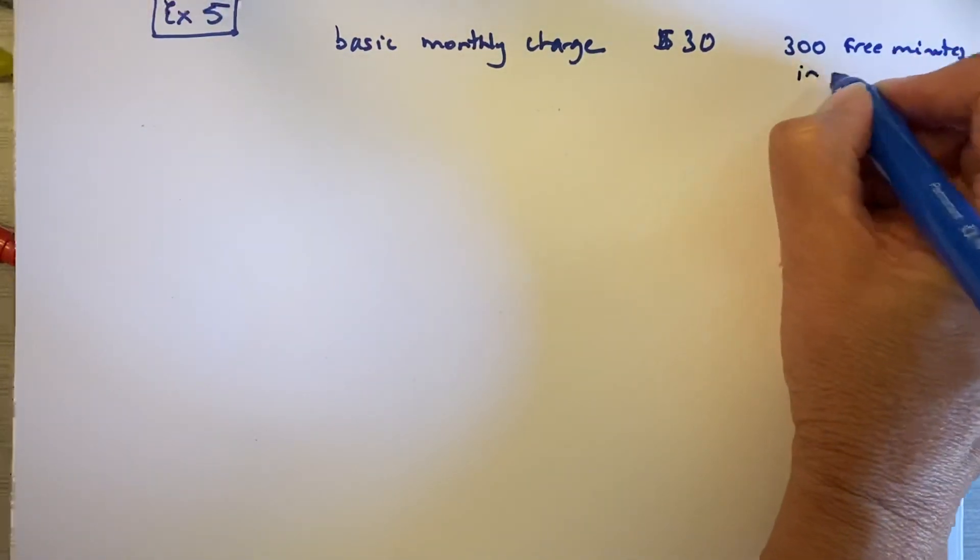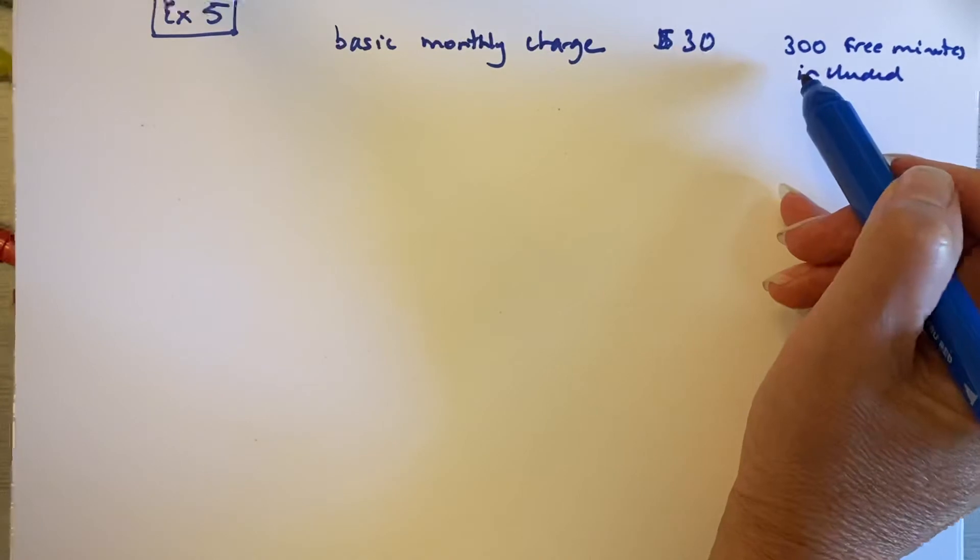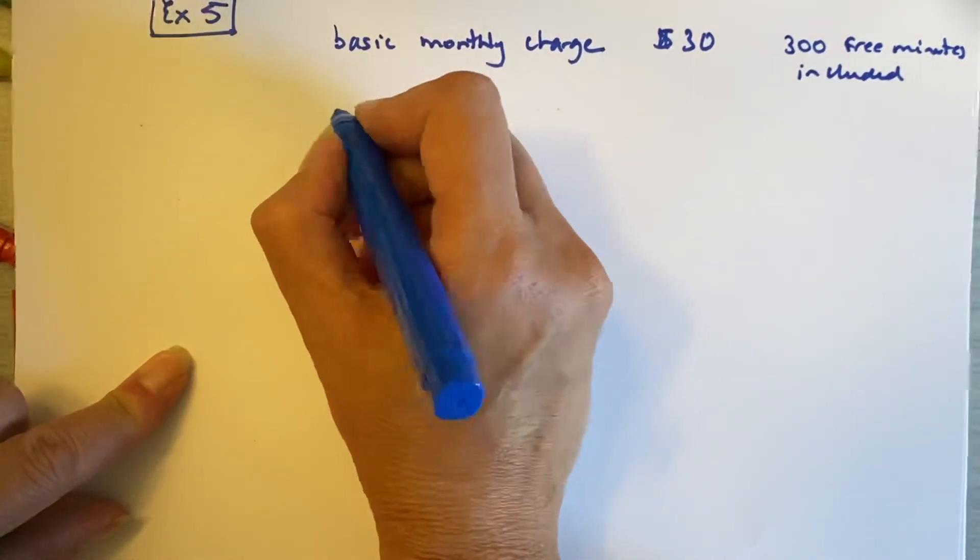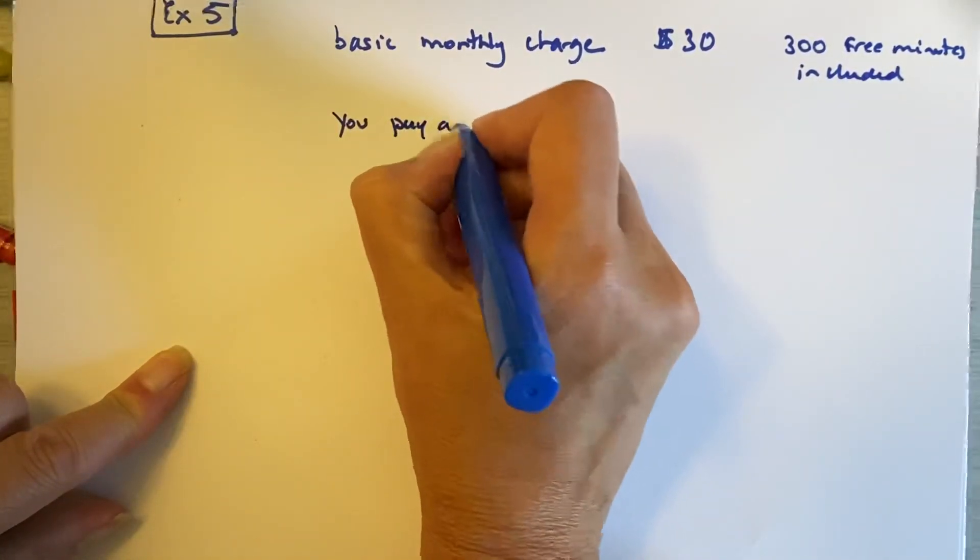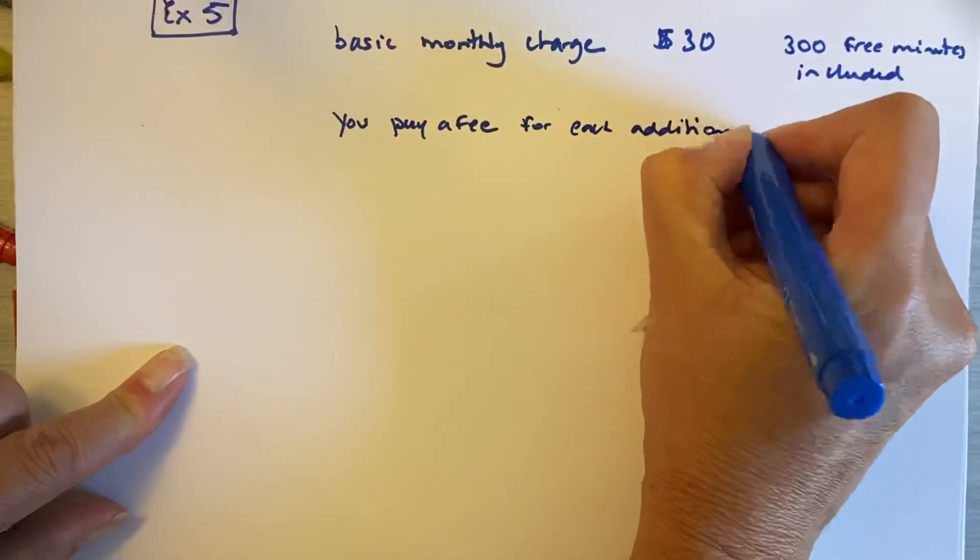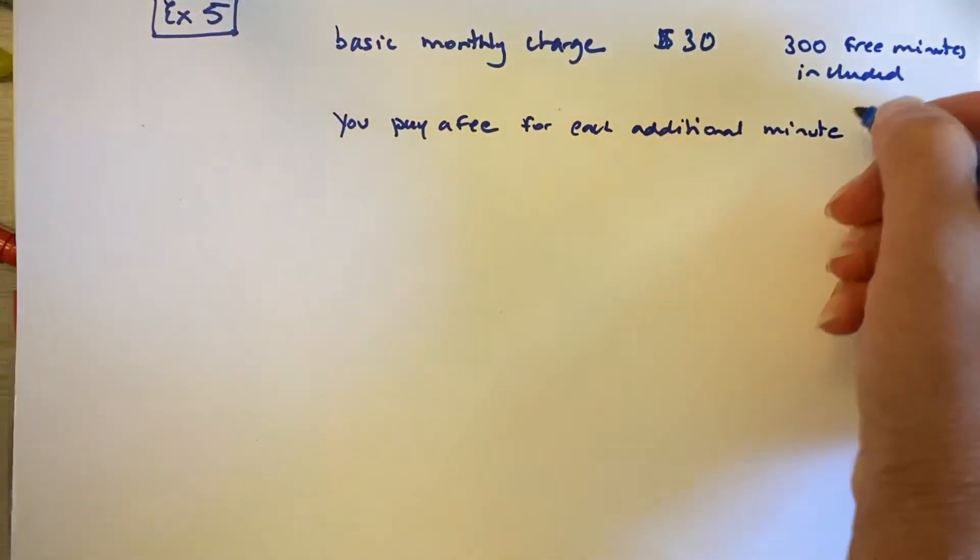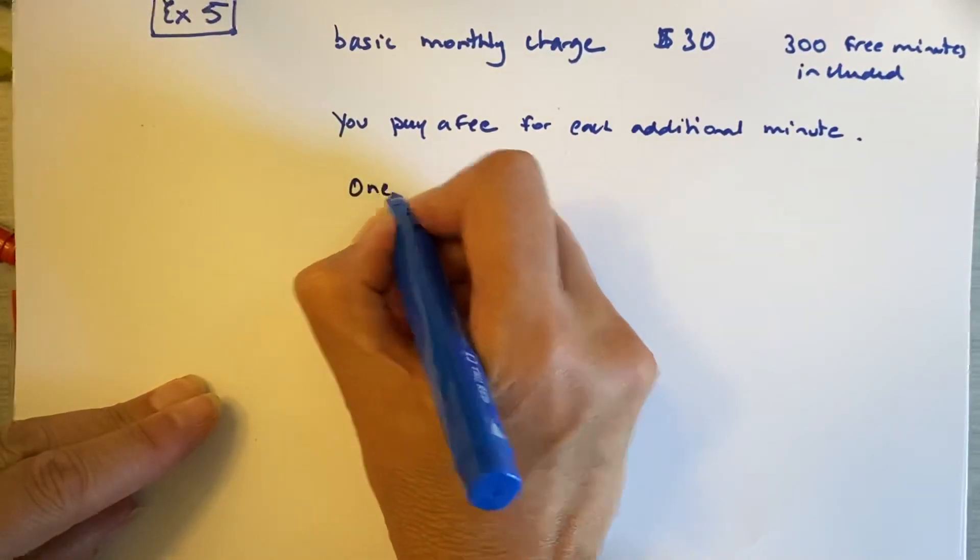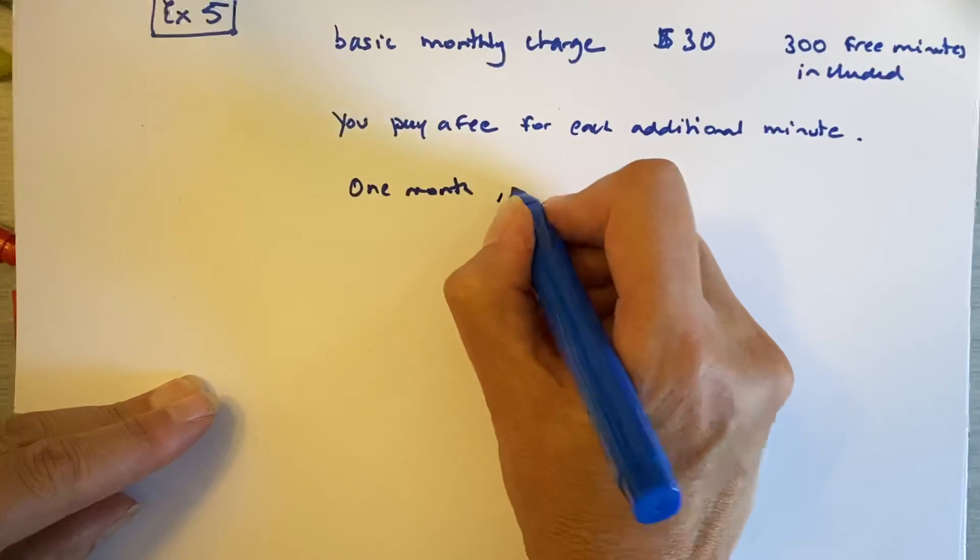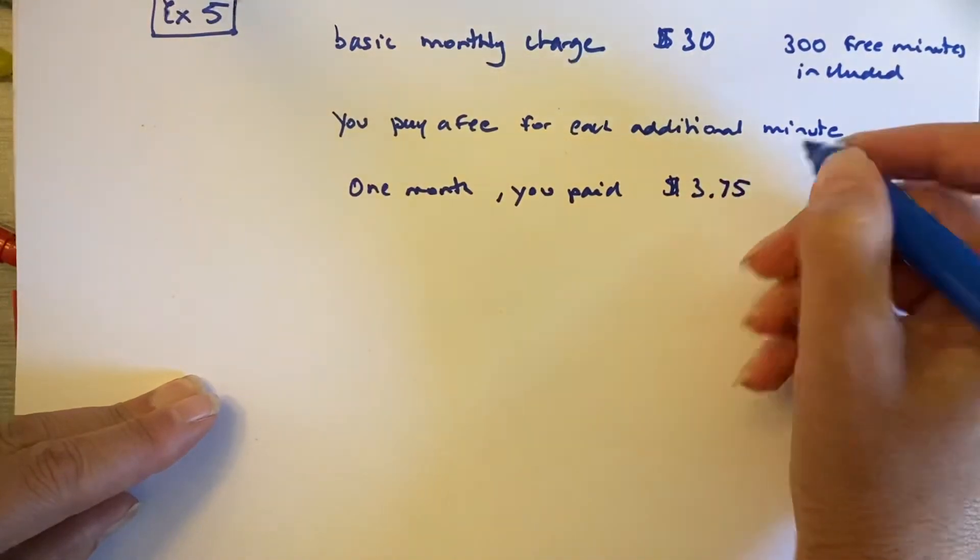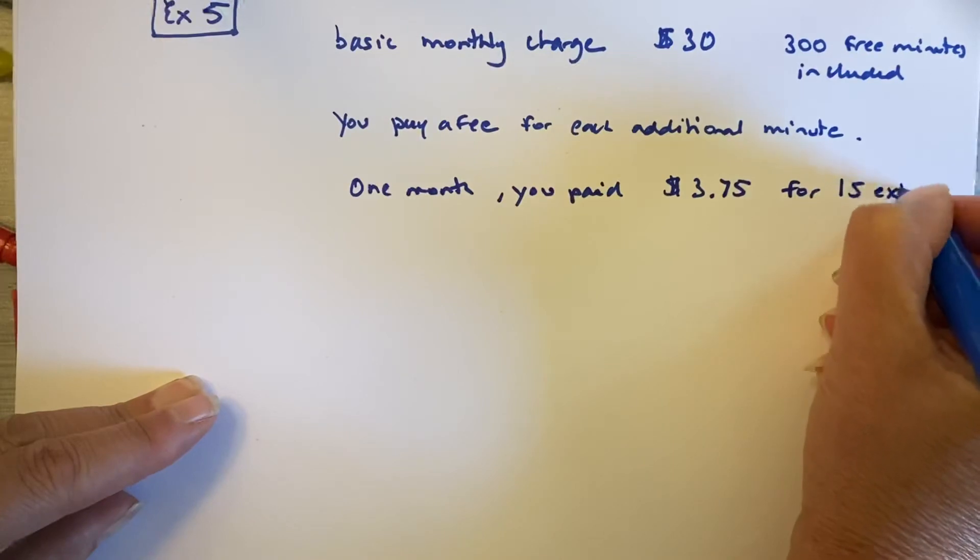And so in this situation, the basic monthly charge is $30. In other words, you only pay when you go to the 301 minutes or 302 minutes. After that, you pay a fee for each additional minute. So in one month, you paid $3.75 for 15 extra minutes.